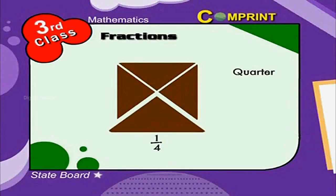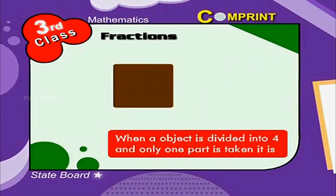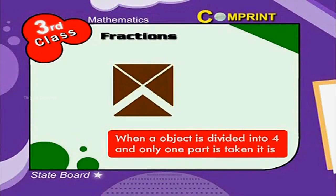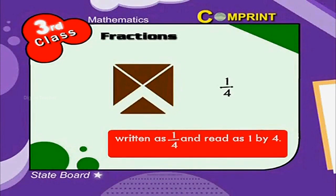This is the picture of a quarter. When an object is divided into four and only one part is taken, it is written as 1/4 and read as one by four.